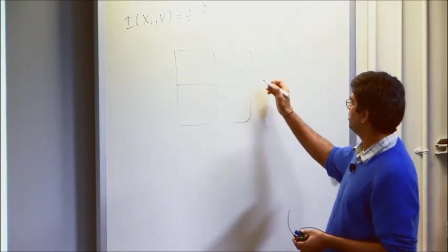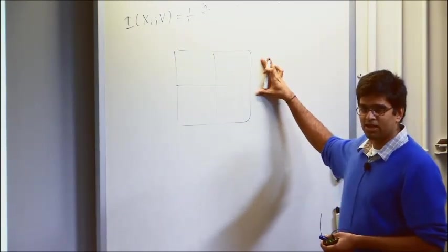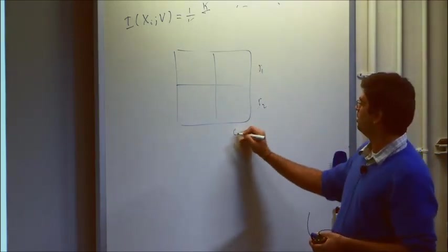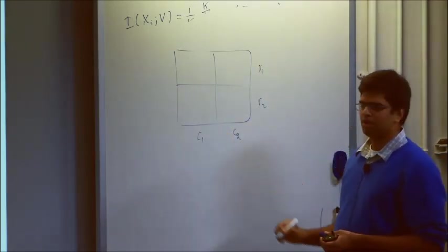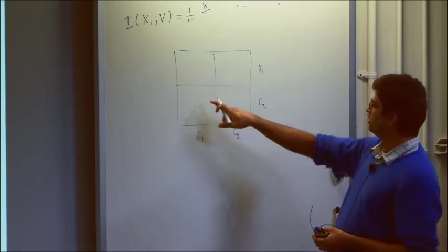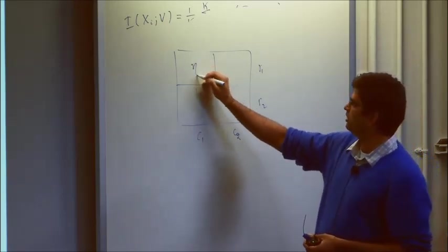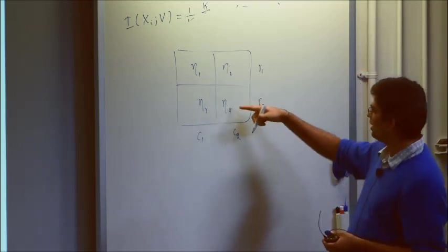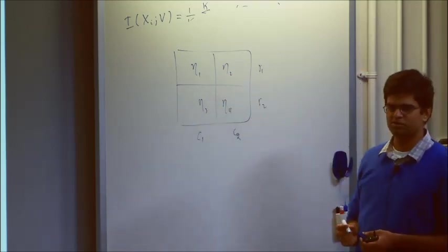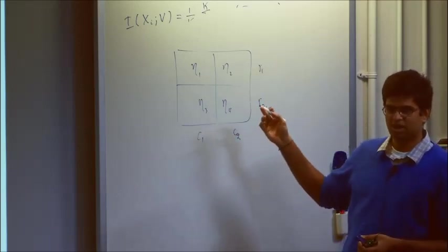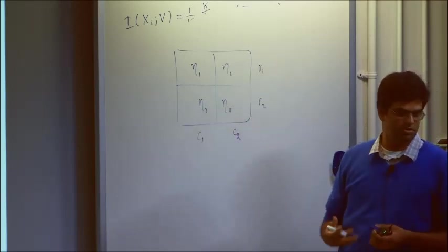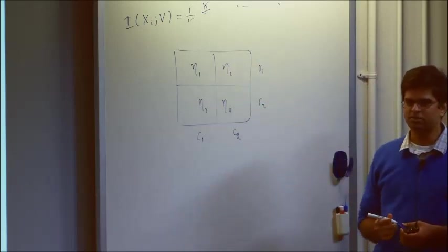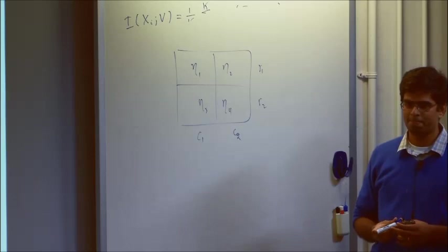For example, take a two-dimensional dataset and release counts in each cell using the Laplace mechanism — straightforward, differential privacy with sensitivity 1. But suppose somebody else released the exact row and column sums. Now, in addition to the noisy counts eta_1, eta_2, eta_3, eta_4, you have four constraints you can use to get four unbiased estimators for each cell, and you can drive down the variance of each count.